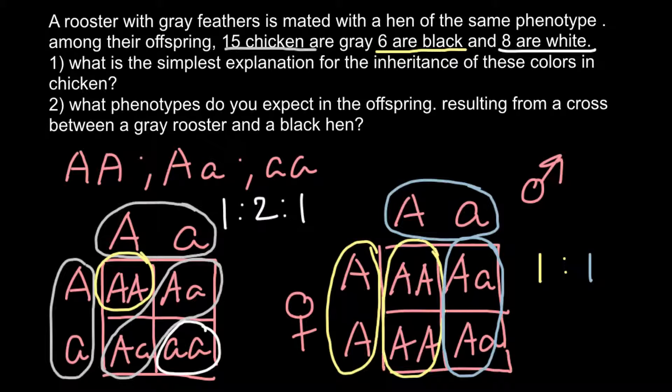One more time, what's the difference between incomplete dominance and co-dominance? Imagine that we have a red flower and we cross with white flower. In incomplete dominance, the result would be a flower of intermediate uniform color that is going to be pink, intermediate between red color and white color.